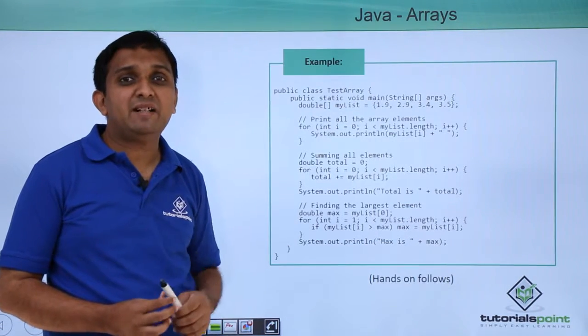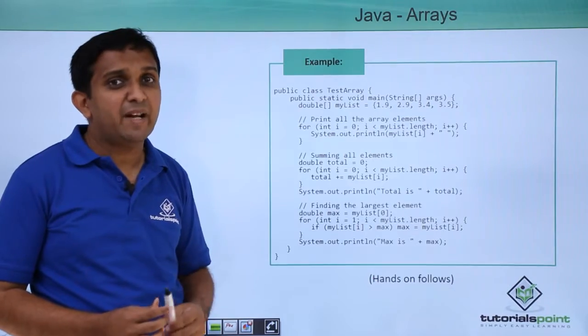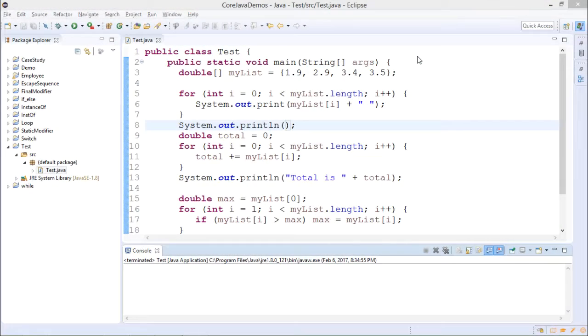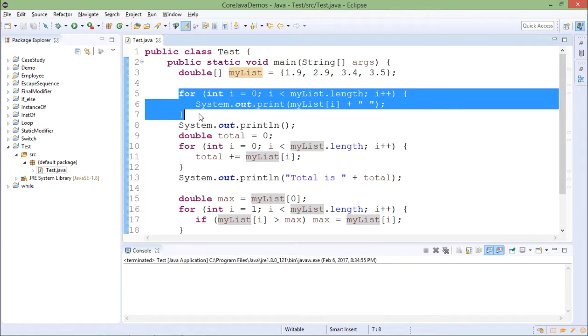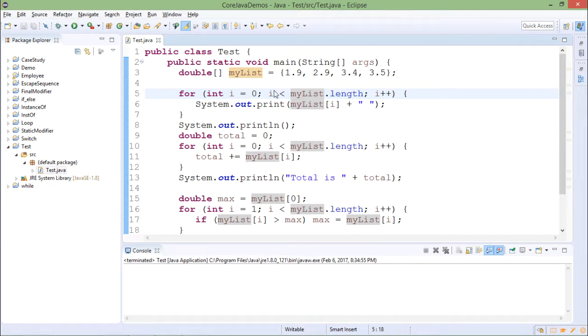We will implement one example for arrays practically. In this program, there are some operations performed on the array. The array is myList array declared as an array of double elements and initialized with a few values. The first part of code is printing the array elements using an ordinary for loop. So for i equals to zero, i less than myList.length - here I am using the length property of the array to detect the end of the array - i plus plus, I am printing the elements.